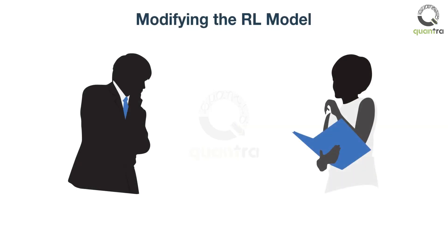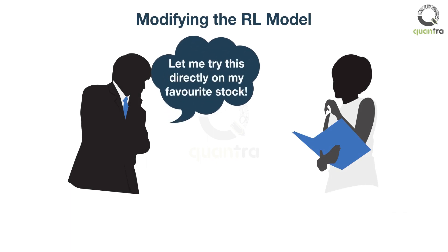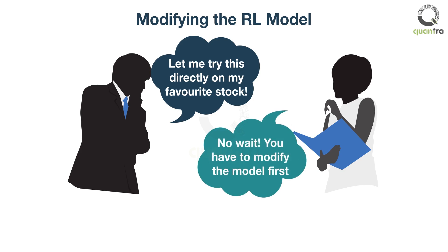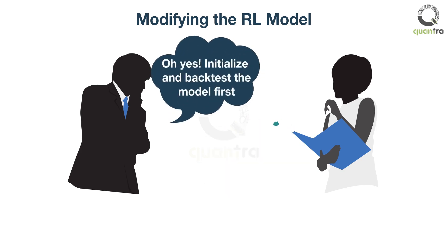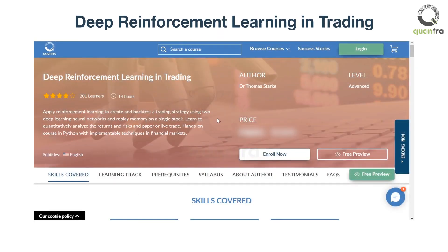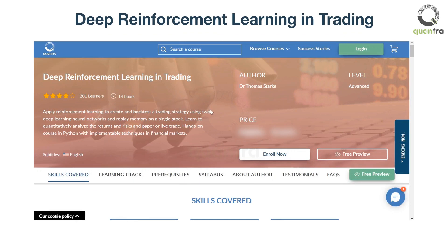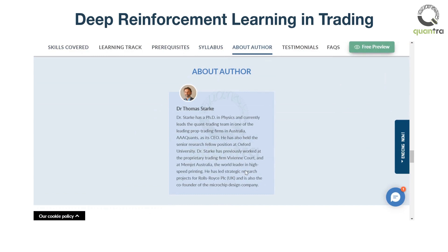But do you think you can use the same strategy code and parameters for other assets? Not exactly. It is possible that this model only performs well in a trending time series, such as the one taken in this example. Hence, we need to test and train the model for other kinds of time series as well. These and other exciting techniques are discussed in the course on Deep Reinforcement Learning and Trading, available on the Quantra platform and authored by Dr. Thomas Stark.